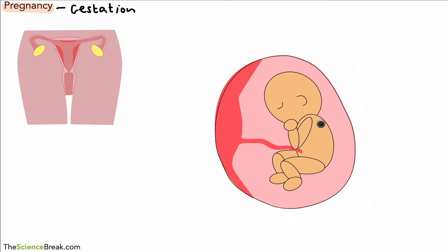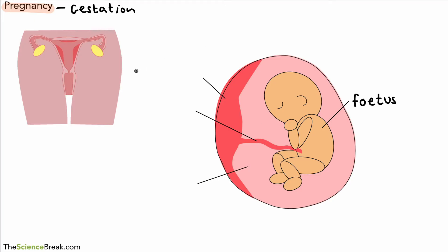Here's our developing baby inside the uterus, or the womb. We call this the fetus — the developing baby is called the fetus. There are a couple more labels we should know, and the first one is this reddish area here that I've drawn, and that's called the placenta.